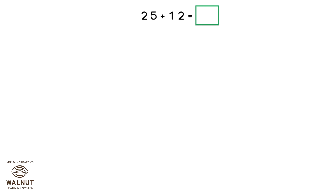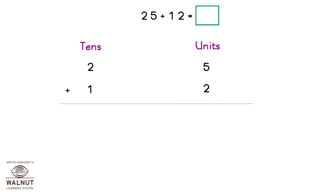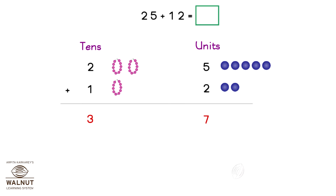We will split both the numbers into tens and units. So for 25, we have two tens and five units. For 12, we have one ten and two units. We add the units: five plus two is seven. We add the tens: two plus one is three. The number that we have is three tens and seven units, which is 37. That is the answer.